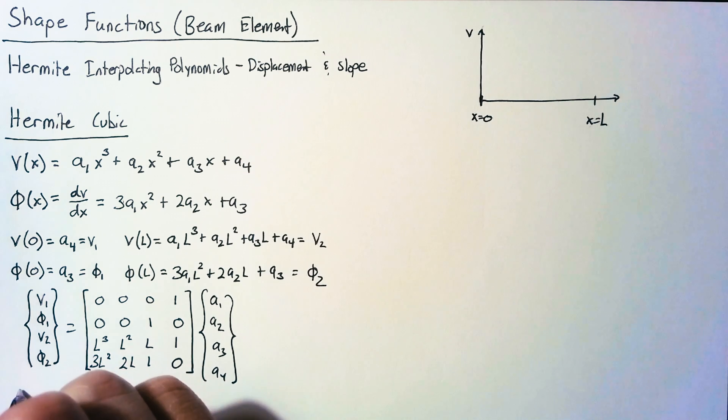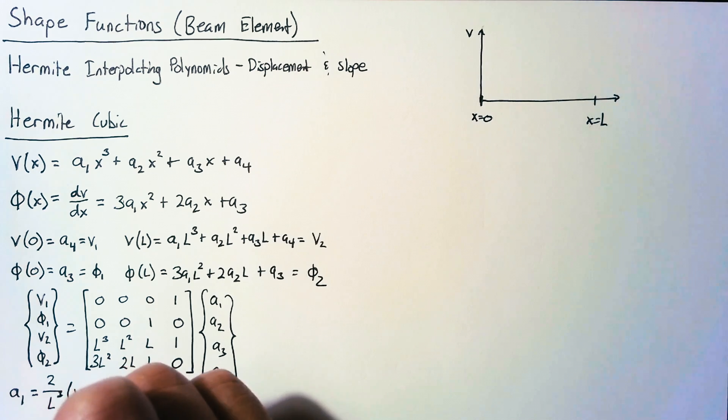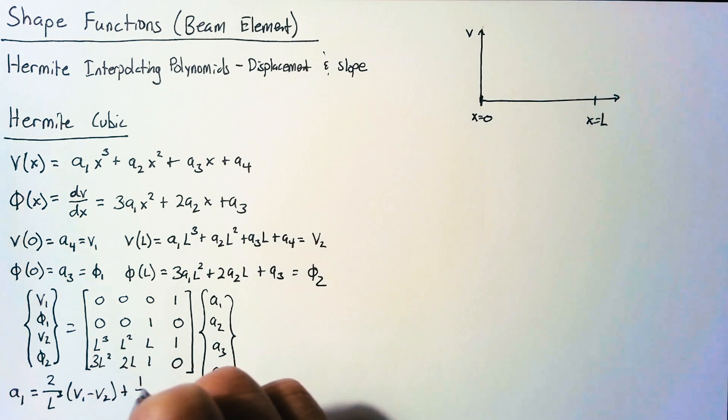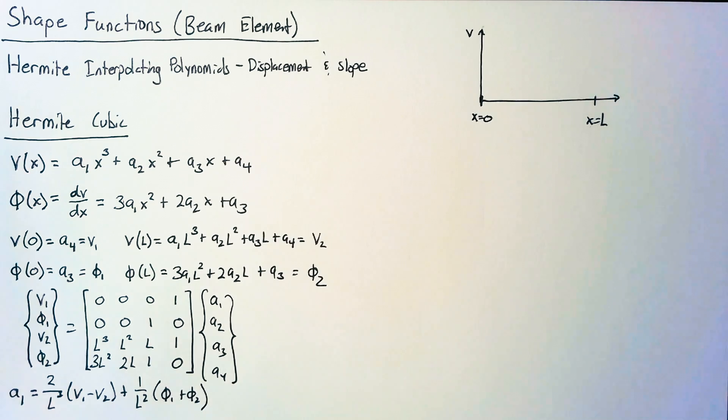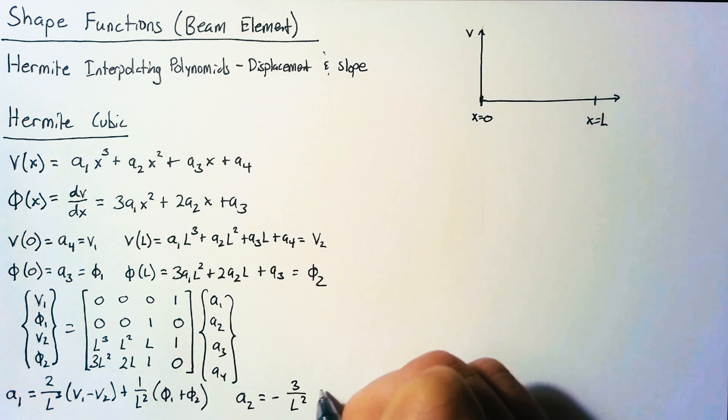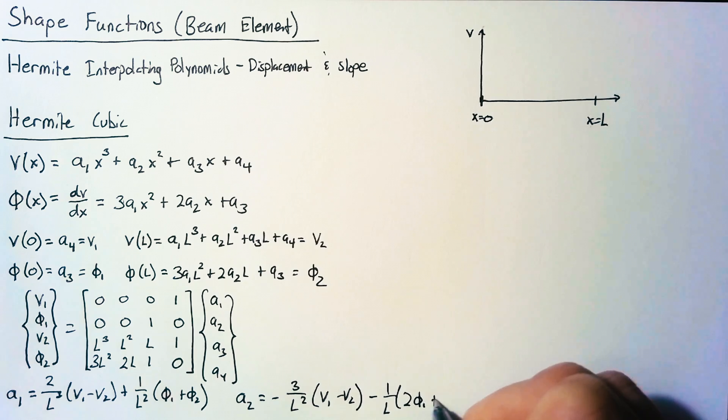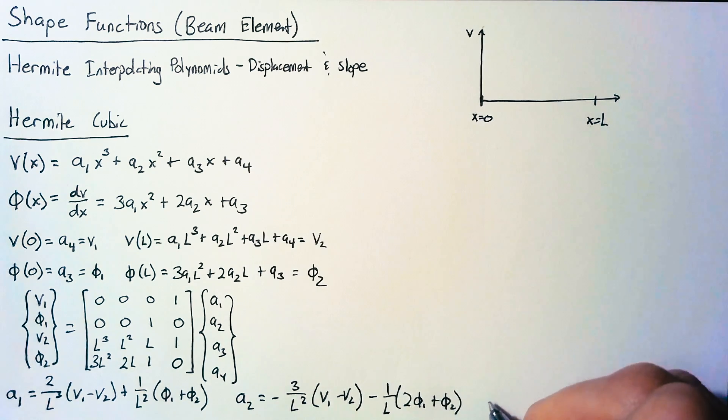Solving for those values, we end up with a1 equal to 2 over l cubed, v1 minus v2 plus 1 over l squared, phi1 plus phi2. A2 was negative 3 over l squared, v1 minus v2 minus 1 over l, 2 phi1 plus phi2. And of course, we already know that a3 is phi1 and a4 is v1.